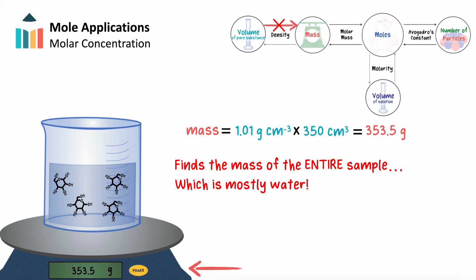This is perfectly fine if we want to know the mass of a pure liquid. But if we're trying to find the mass of just the glucose dissolved in the solution, we'll have to reference the concentration of the glucose in the solution.